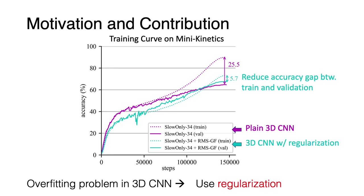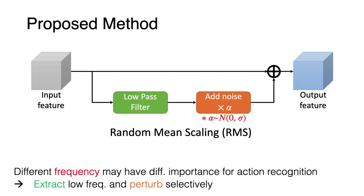Our motivation is that 3D-CNNs often face an overfitting problem. As shown in the purple graph, the difference between train and validation accuracy of 3D-CNN is very large. In this work, we propose to use regularization to tackle the problem. The blue graph shows that our method increases validation accuracy by reducing overfitting.